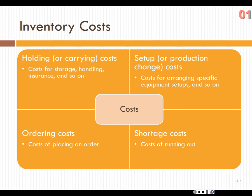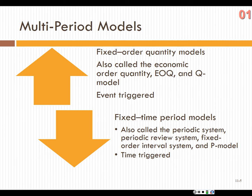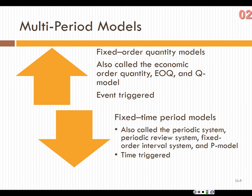We've seen the inventory costs — this will be the third time. We've got holding or carrying costs, set-up or production costs, ordering costs, and shortage costs. The fixed order quantity model is also called the economic order quantity, EOQ, or Q model, and it's event-triggered: when we hit a certain amount of inventory, that triggers us to order more. The fixed time period is also called the periodic system, periodic review system, fixed order interval system, or P model — it's time-triggered.